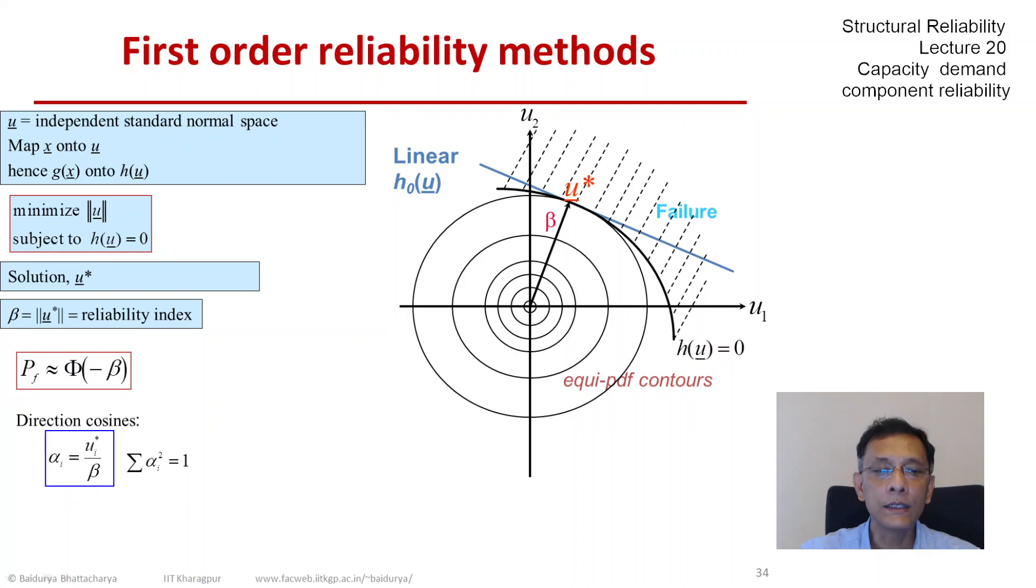If you have to be completely accurate, then we have to also evaluate that fact, whether the origin is part of the failure region or not. For the purpose of completeness, we should define the failure probability as Phi of minus beta times the sign of h at the origin.